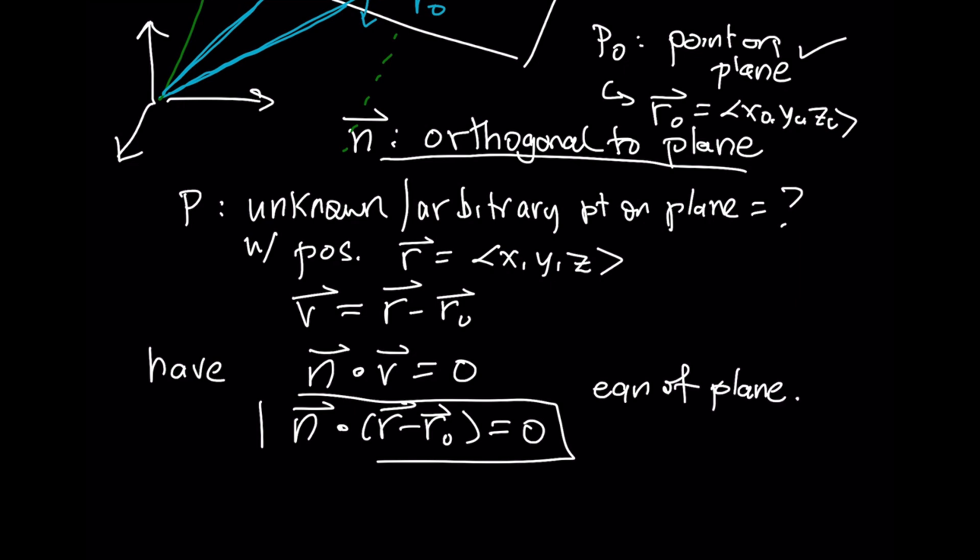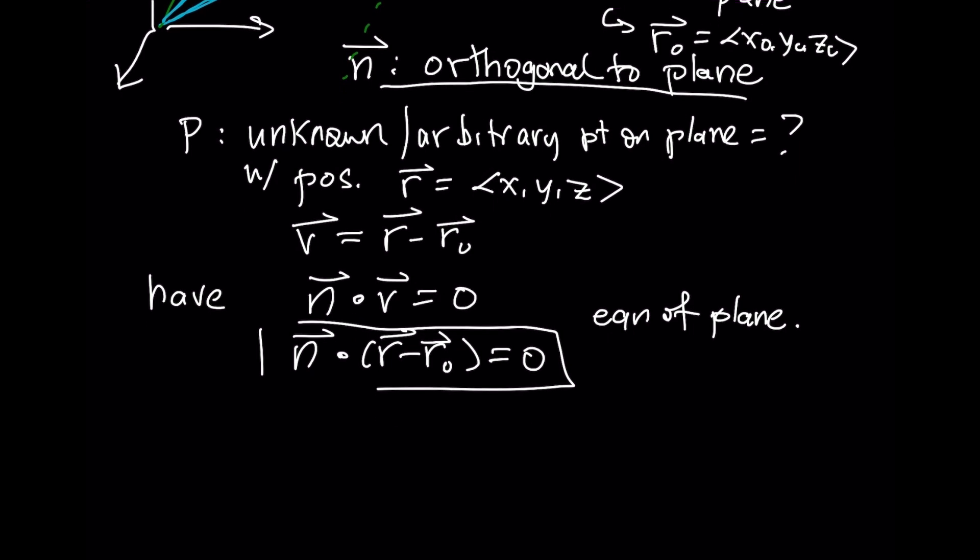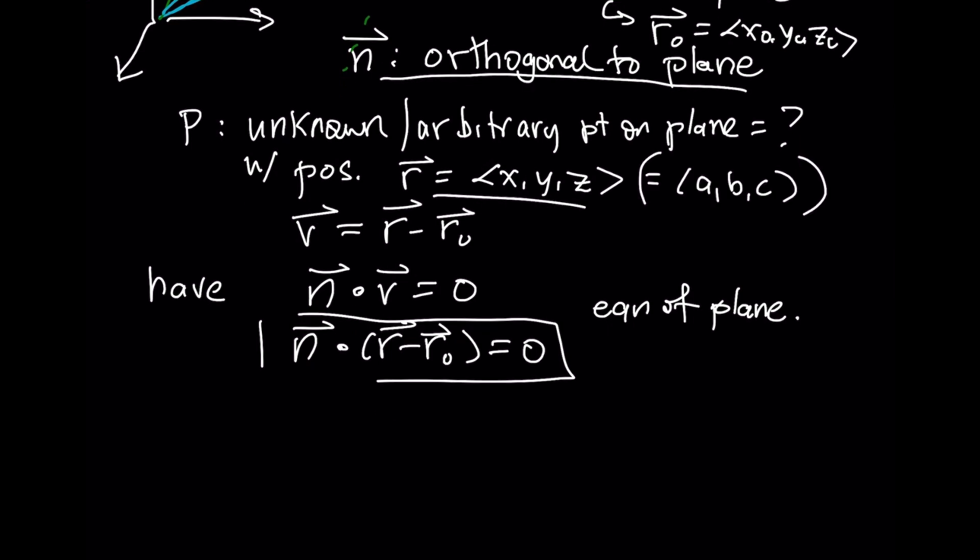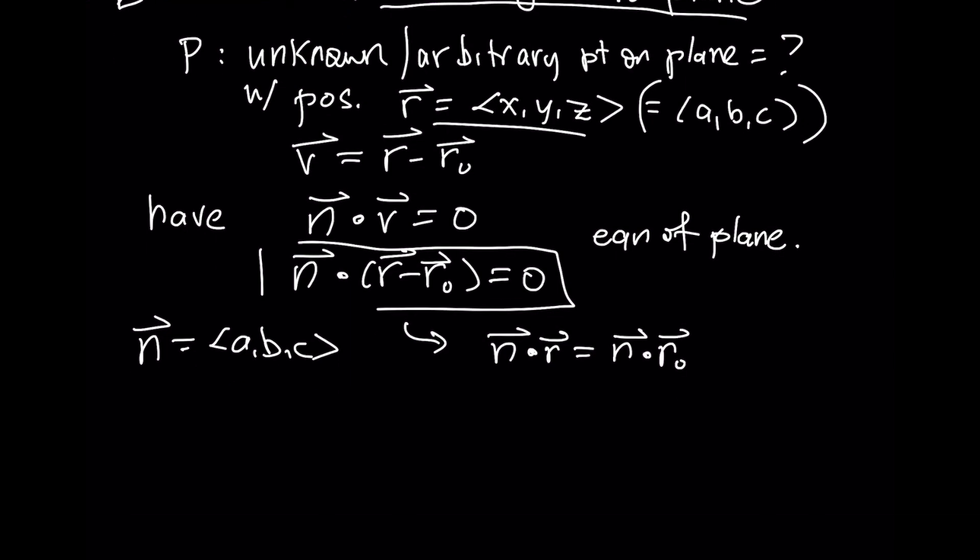A plane is a collection of points, and the vector R will have those points that we want. Let's say that N is <A, B, C>. If I use dot product properties, I'll have N·R = N·R₀. This right here is going to be <A, X₀, B, Y₀, and C, Z₀>. And this is just some constant, so I'm going to call this D.